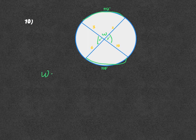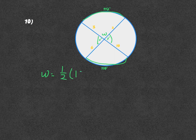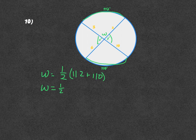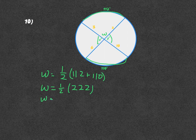We would have W equals half of the sum of the intercepted arcs, 112 plus 110. So W equals half of 222, which is 111.